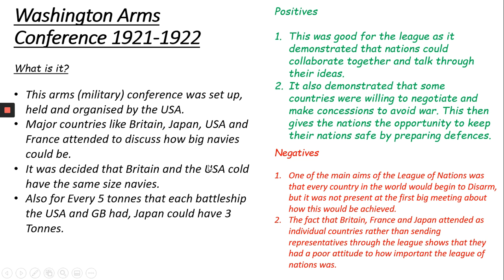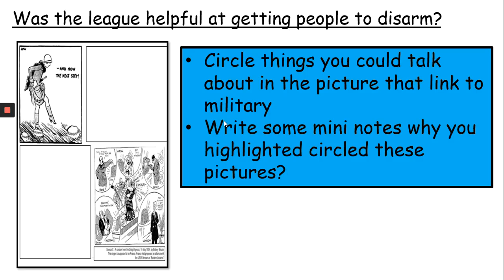So that's the key information. What we're going to try and do now is implement them to the sources. You should have a sheet that looks like this, and we're going to analyse two sources together and annotate and make notes around these additional boxes at the side of the sources. Our job as we analyse these sources is: was the League helpful at getting people to disarm? And we're going to see some representation of what people thought.